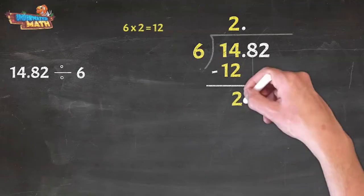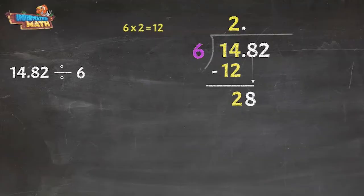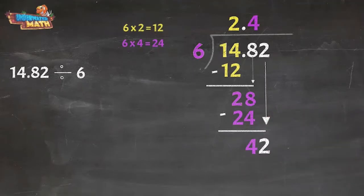Does six go into 28? Absolutely, it goes in four times. 28 minus 24 leaves us with four. Since six does not go into four, we bring down the two.